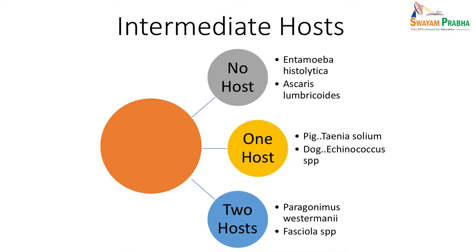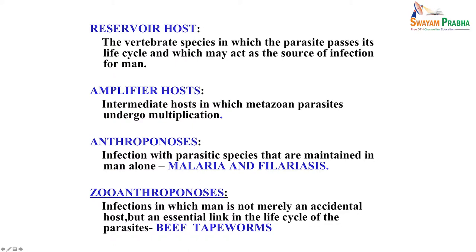The reservoir host is the one in which the parasite passes its life cycle and which can also act as the source of infection for man. An amplifier host is where multiplication occurs. Anthroponosis refers to infection that occurs only in human beings, as in malaria and filariasis — these parasites do not cause infection in animals. Zooanthroponosis refers to infections that cause disease in both animals and man, as seen in beef tapeworm.